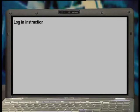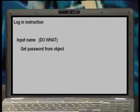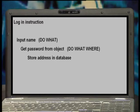Let's look at an example. Take the login instruction. What does the user have to do, where? The user has to input his name and get a password. Yes. If we had to write an instruction, it would look something like this: 'input name' will be do what; 'get password from object' will be do what, where; 'store address in the database' will be do what, where. These instructions are given in a logical order from start to finish — we say they are in sequence. To show sequence, we write the instructions in the order in which they must be done.